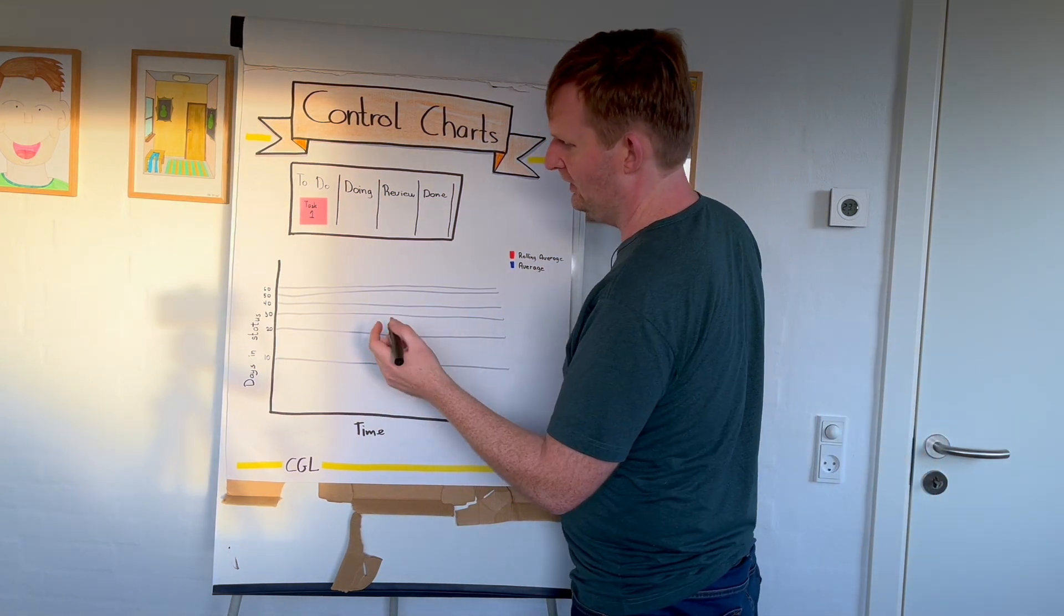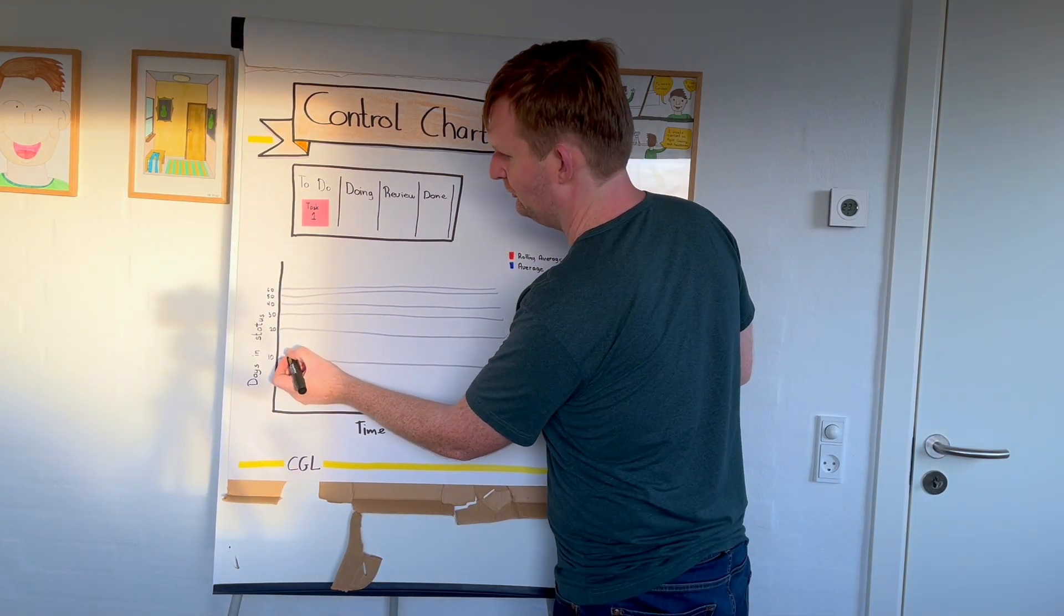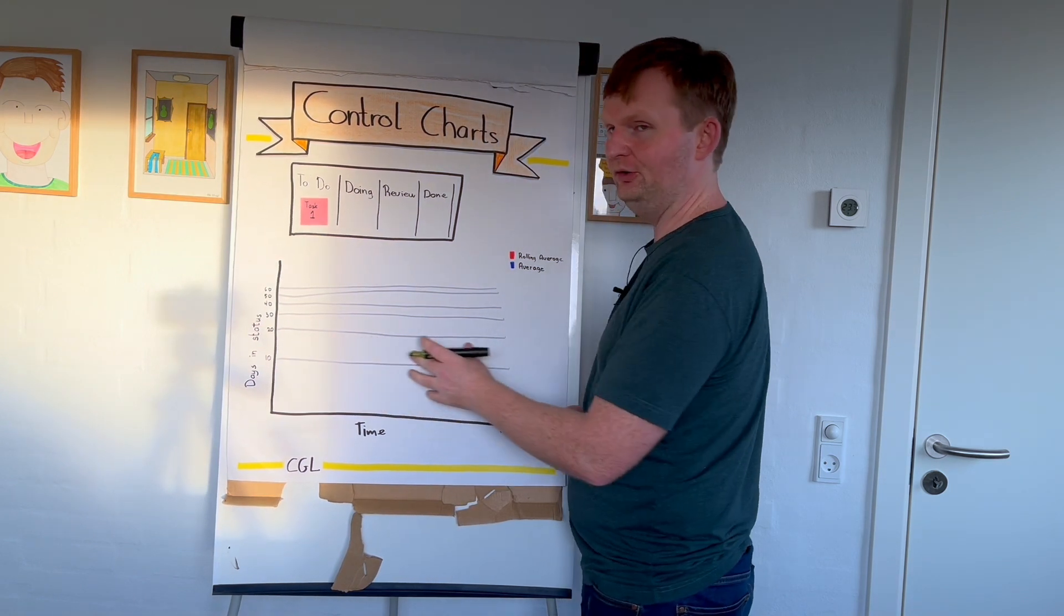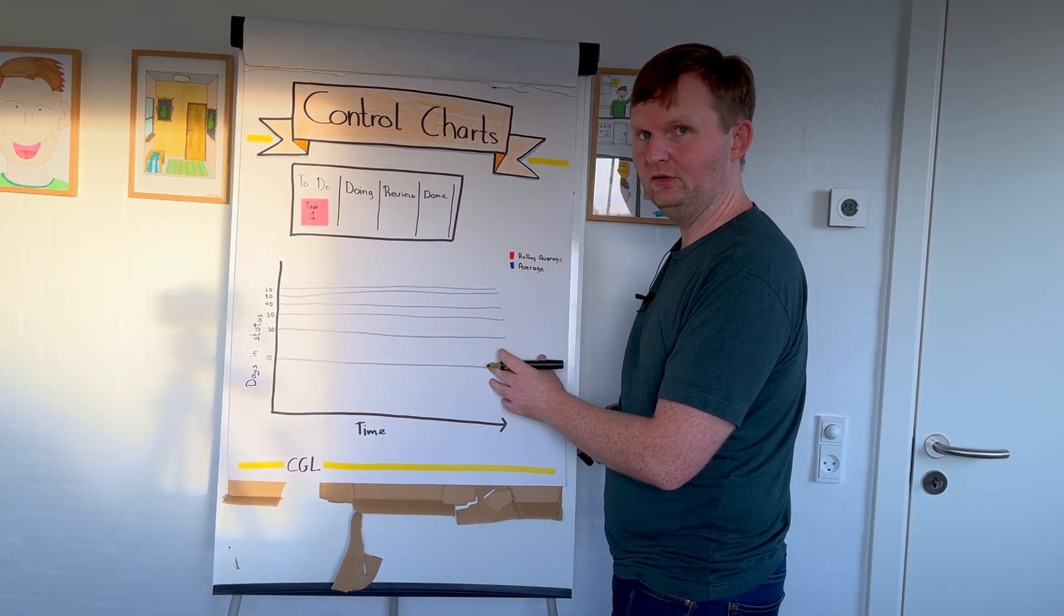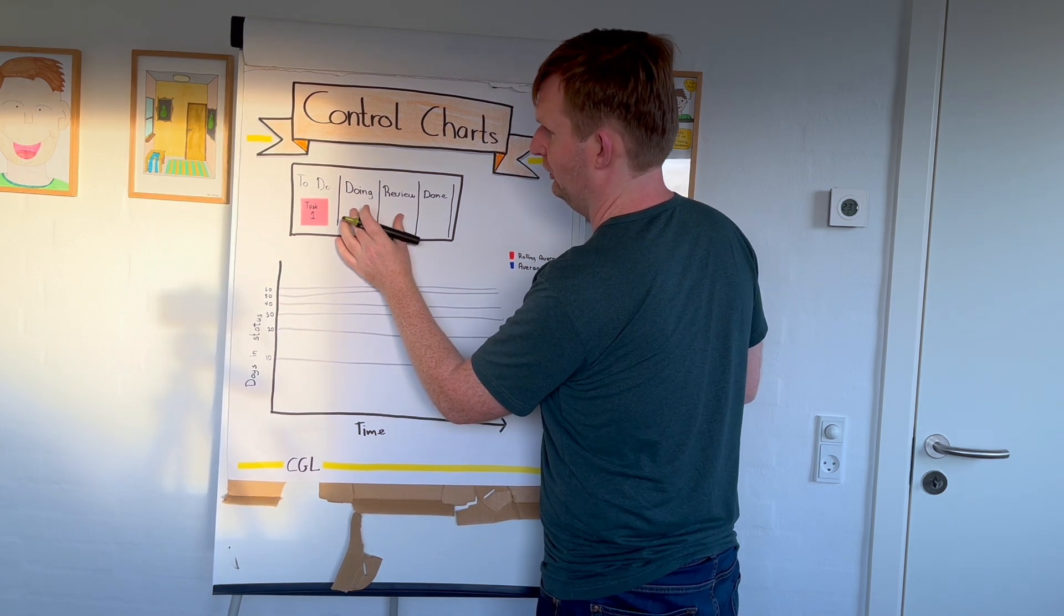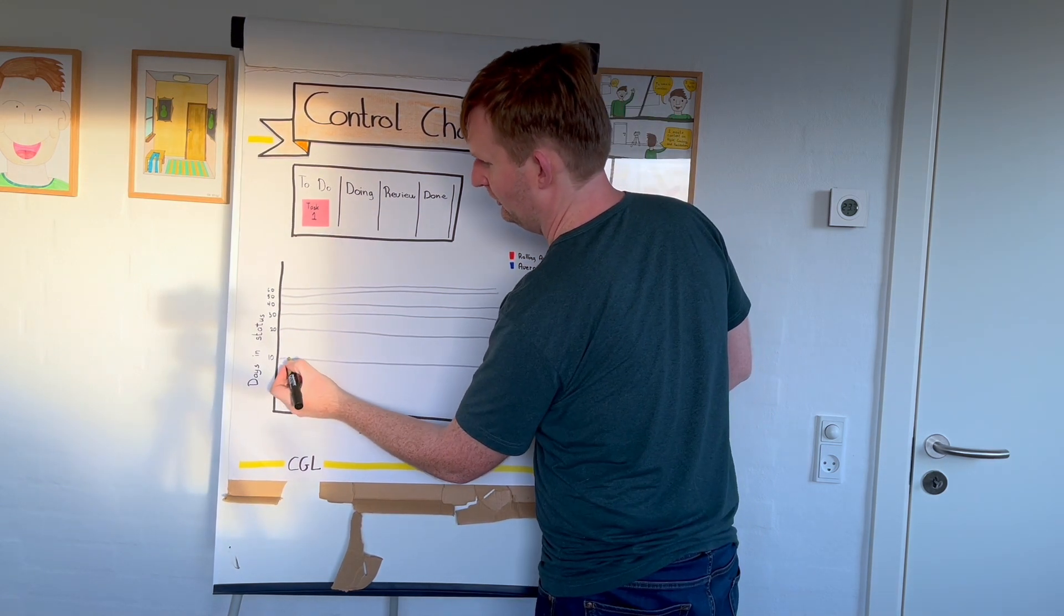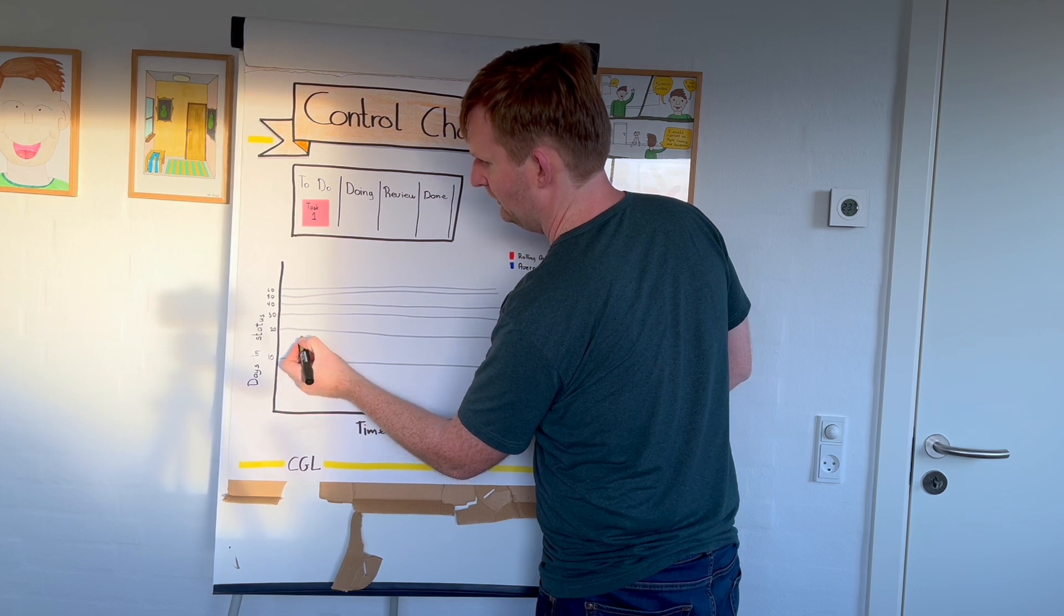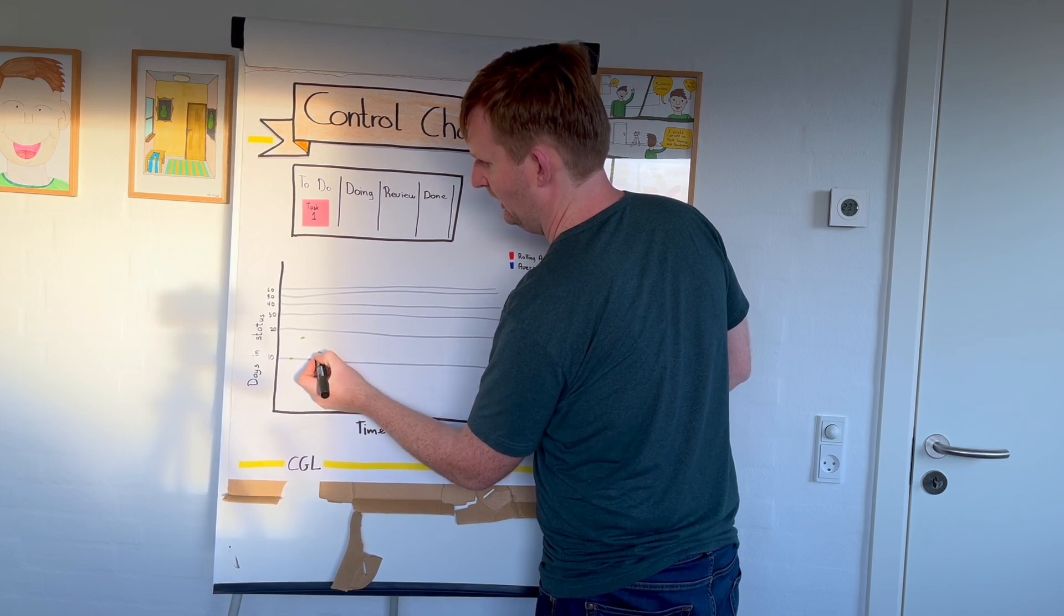Anyhow, what you then do is you start to plot all your issues. So for instance, let's say that this first issue has been in doing and review for 10 days. For instance, one has been in 18 days.